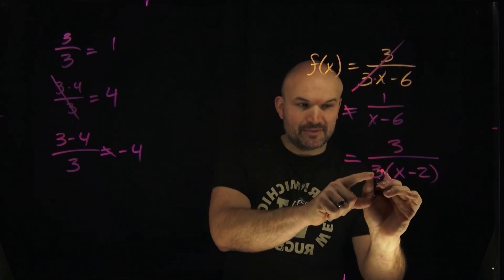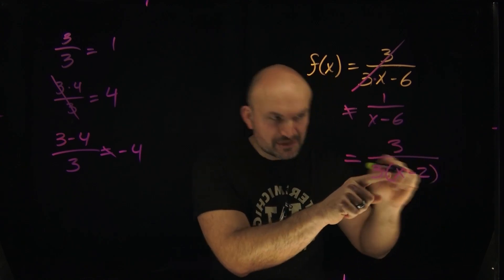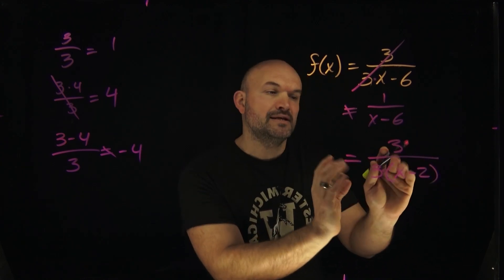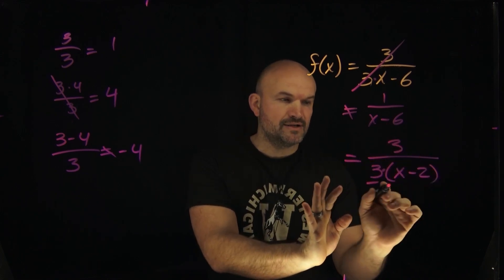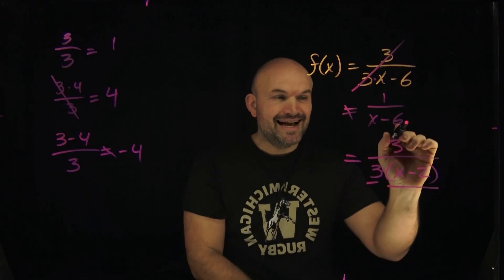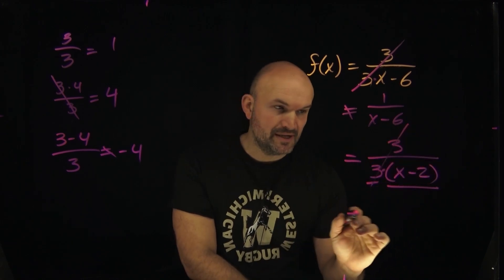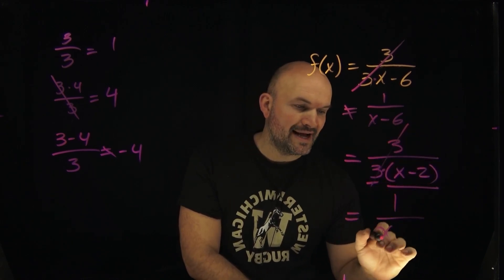Now what I want you to see is we have a number times this expression. Yes, there's a subtraction inside these parentheses, but that subtraction is not messing up the product between these two quantities. So we have a quantity multiplied by another quantity. Now we can apply the division property, and we get 1 over x minus 2.